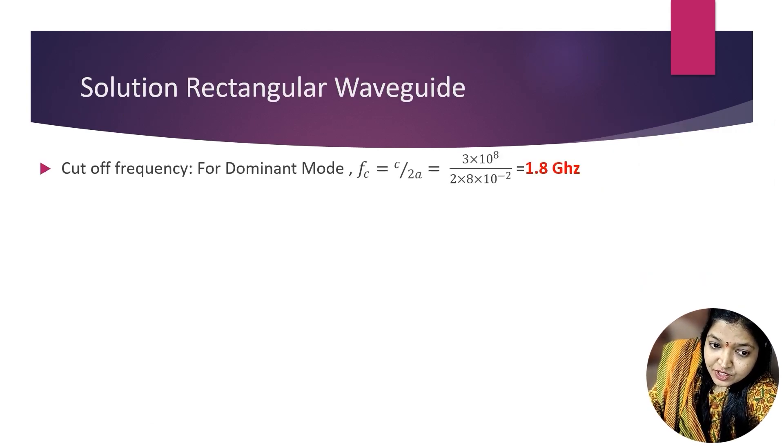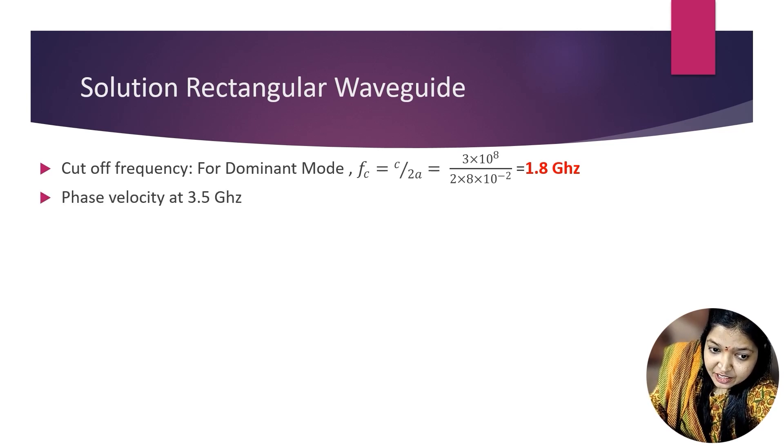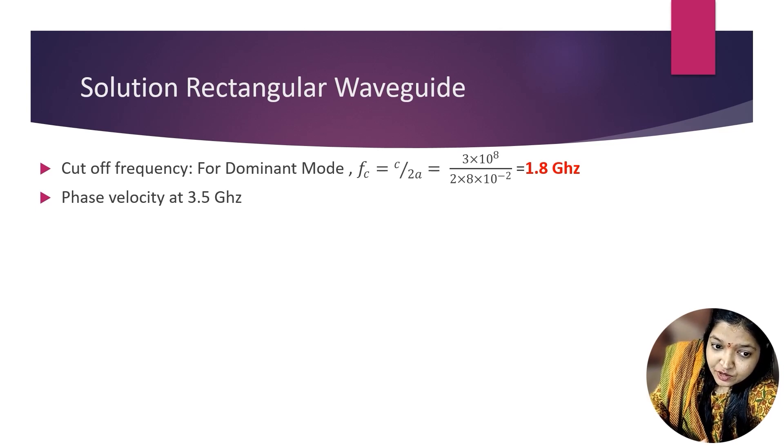So first we want to find the cutoff frequency for dominant mode. The cutoff frequency formula is Fc equals C divided by 2A. C is the speed of light, 3 into 10 raise to 8 m per second. That's why we converted this into meter. Then A, 2 into 8 into 10 raise to minus 2 because it is 0.08. The answer is 1.8 GHz. This is your cutoff frequency.